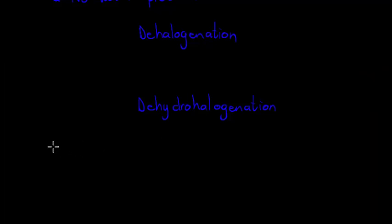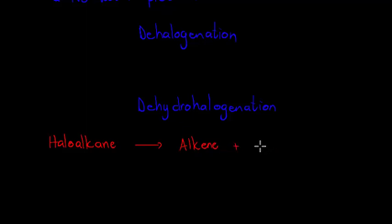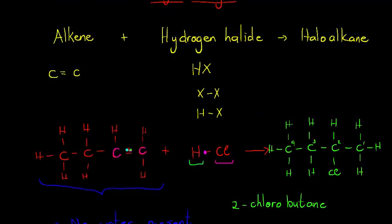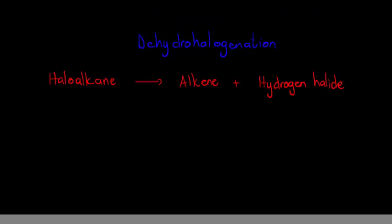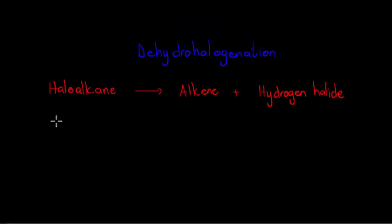As we said, we are going to start with a halo alkane, and then this halo alkane is going to be broken up into its original alkene and hydrogen halide. Now how does that work? What are the reaction conditions?